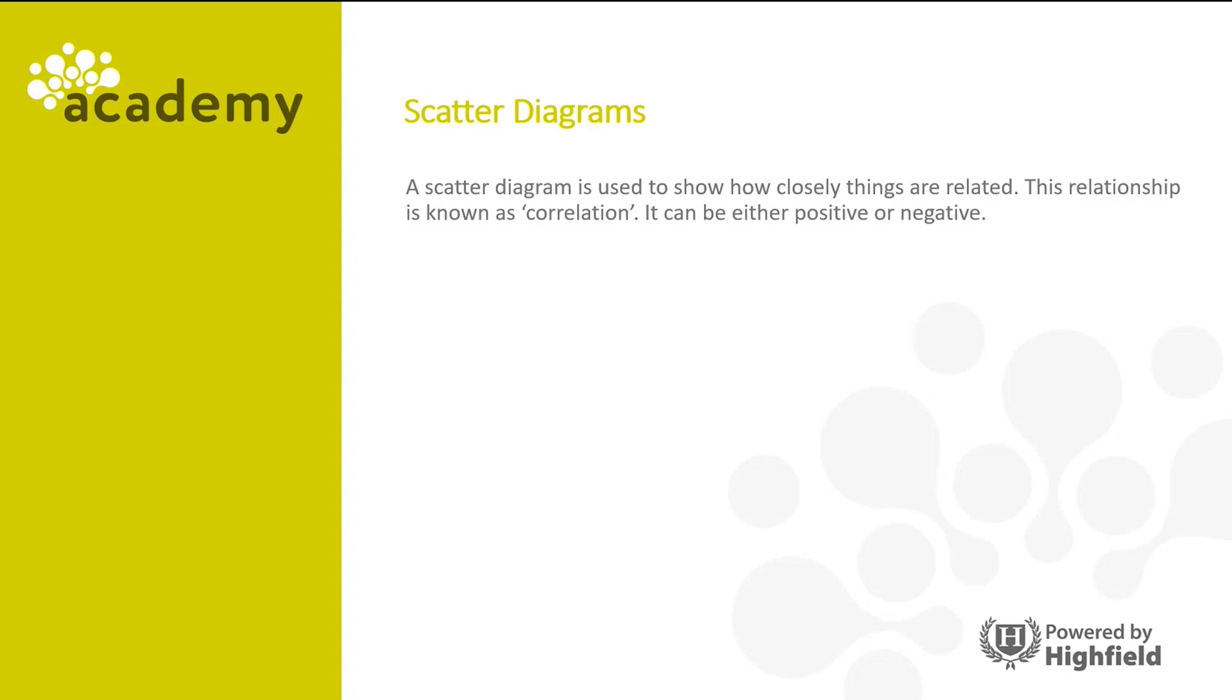A scatter diagram is used to show how closely things are related. This relationship is known as correlation. It can be either positive or negative.